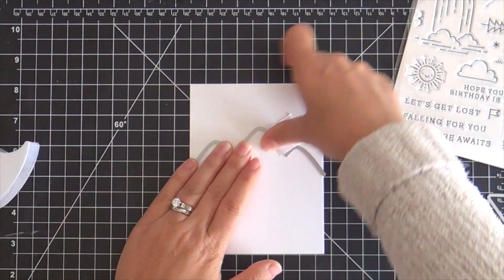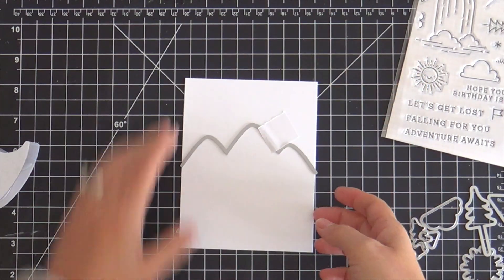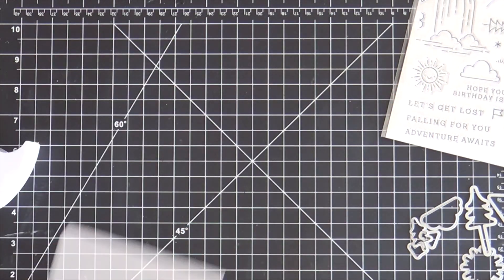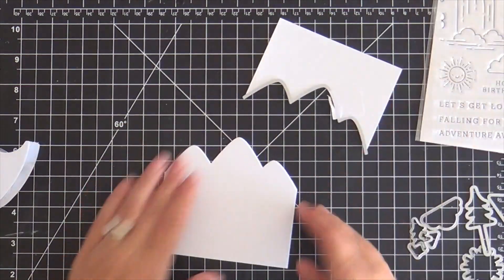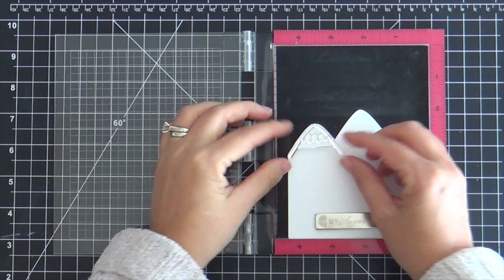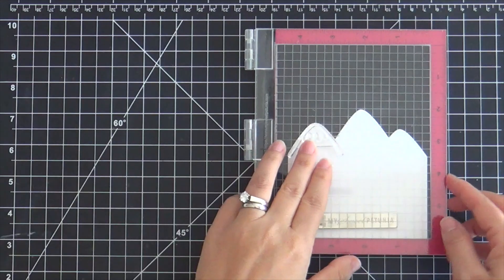To begin, I am taking that die that has the three mountains and die cutting that into some white cardstock. Off camera, I ran it through my die cutting machine. I found it was easiest to die cut the mountains first. That way you know exactly where to stamp them.